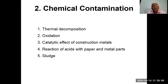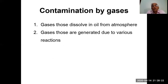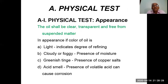Chemical contamination includes thermal decomposition, oxidation, catalytic effect of construction materials, and reaction of acids with copper and metal parts causing sludge. Contamination by gases includes gases dissolved in oil from the atmosphere and gases generated due to various reactions.